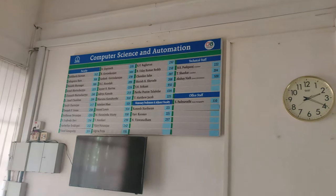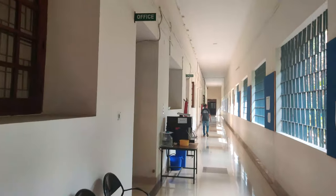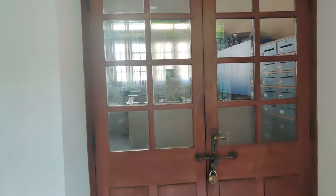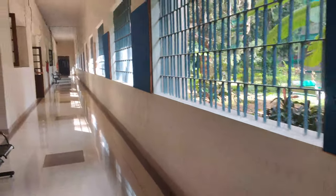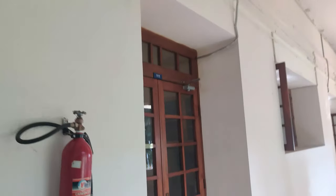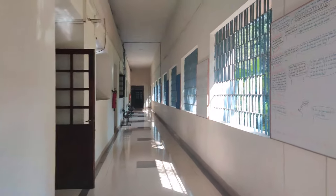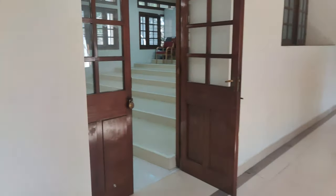This is the list of professors and their room numbers available in CSA. This is the main corridor, and here comes the office — as today is a Sunday, the office is closed. This is a coffee machine — a pay-and-use machine. This is the CSA chairman's office. There are boards everywhere in CSA displaying intellectual comics.